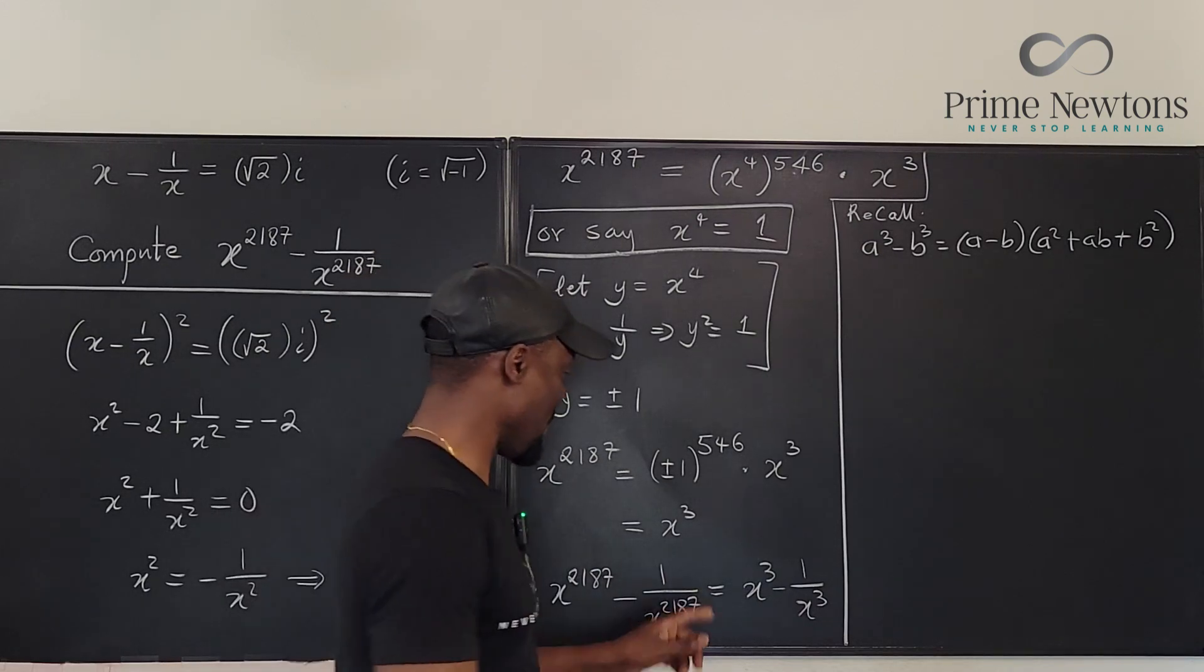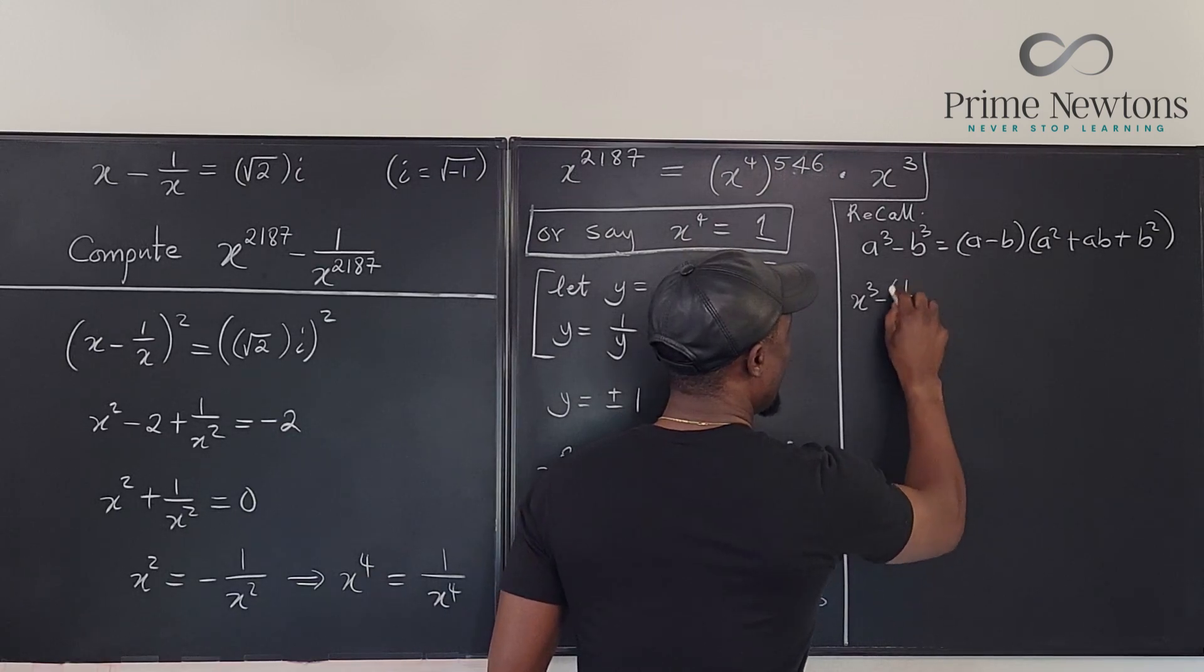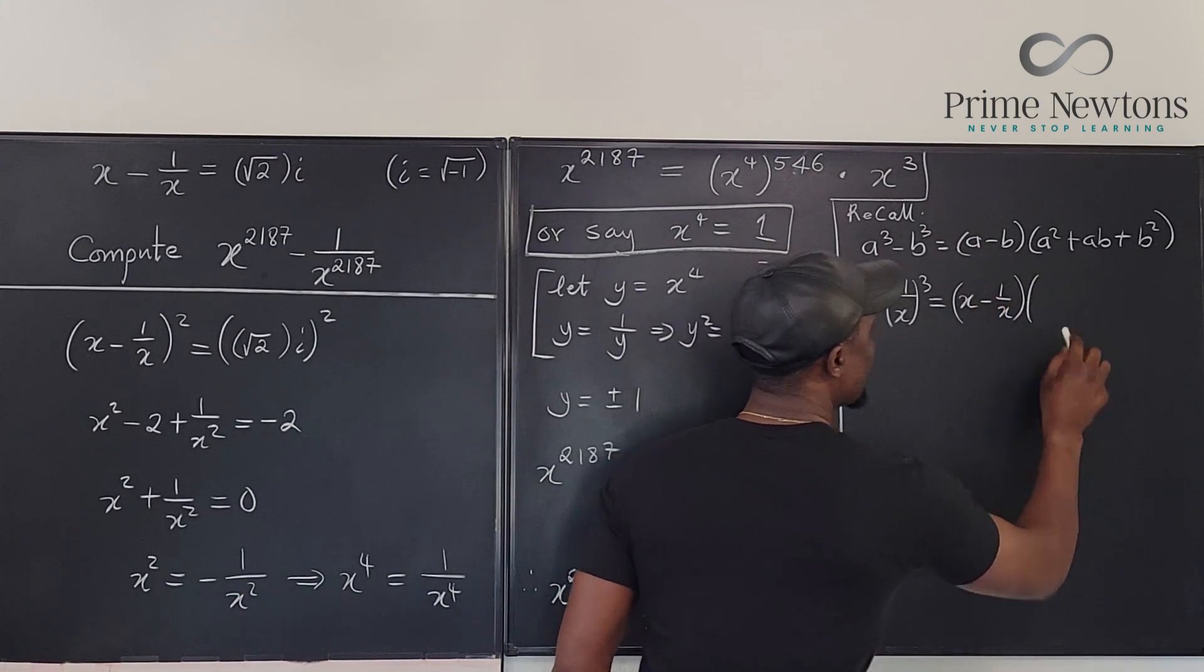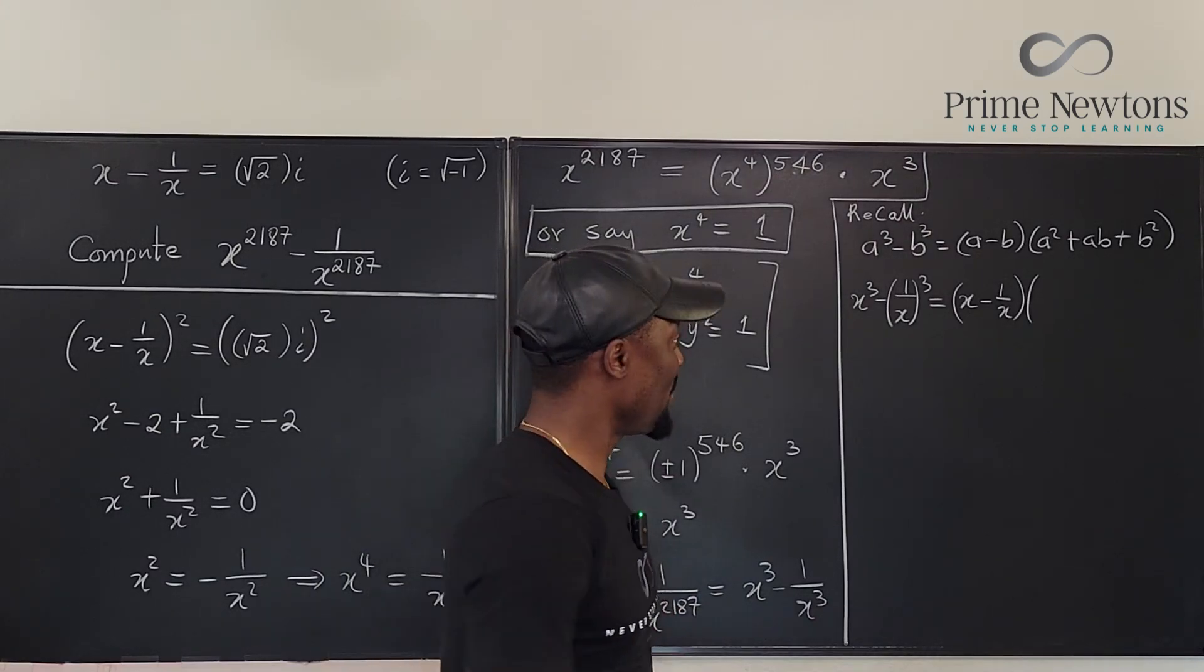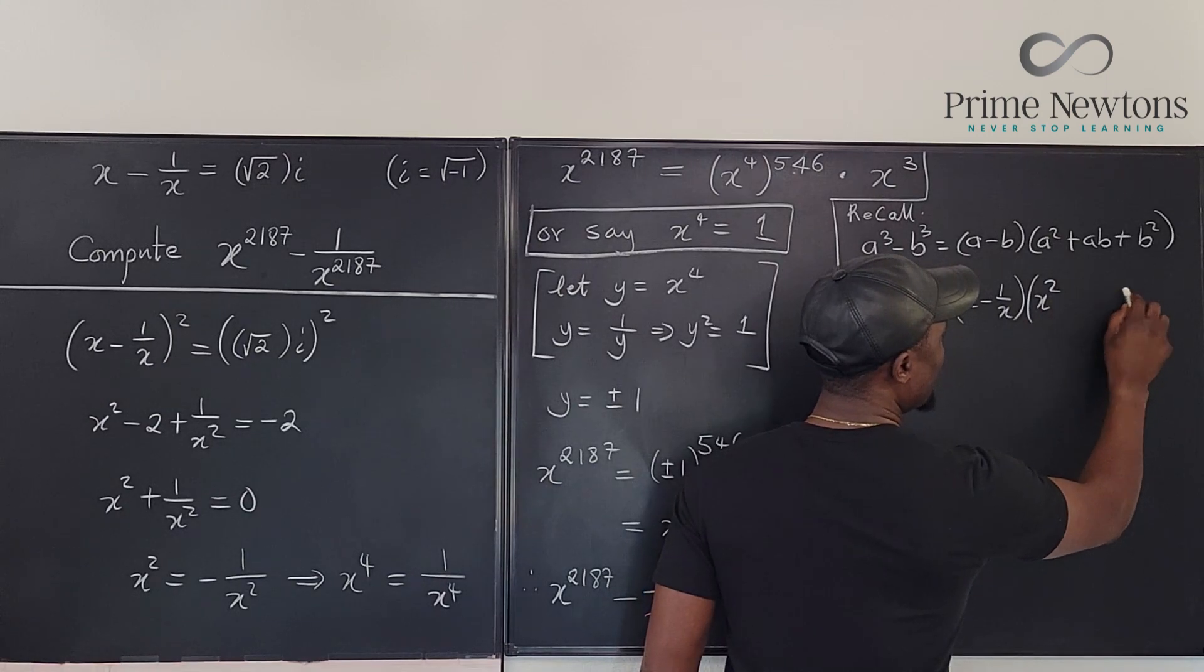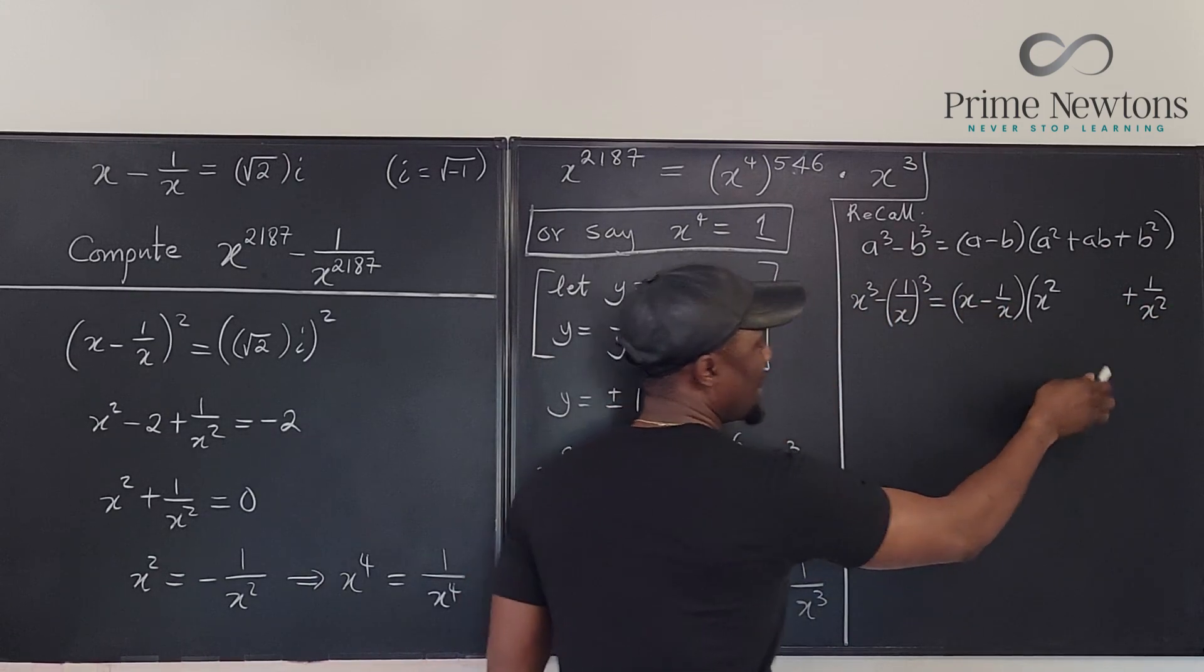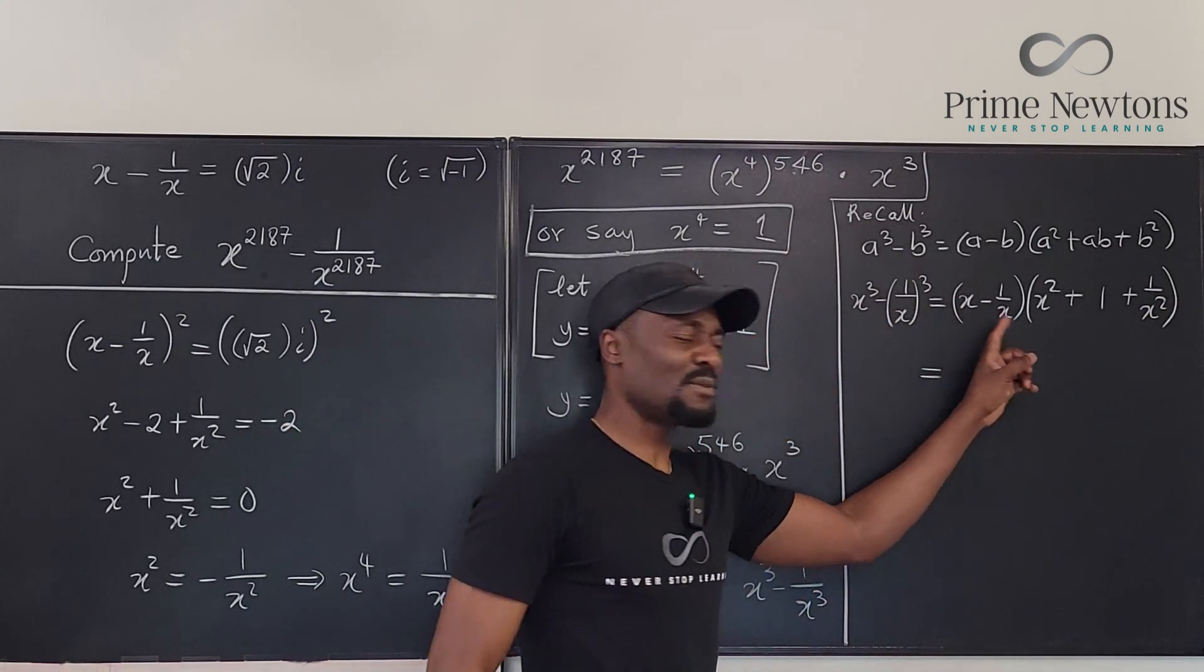What can we do now? We just use it. So we know that x cubed minus 1 over x cubed is equal to (x minus 1 over x) times—how would you get that a squared plus ab plus b squared?—which is going to be x squared plus 1 over x squared, and then ab will be the product of these two: x times 1 over x is just plus 1. Nice. So see what we get. What is x minus 1 over x?